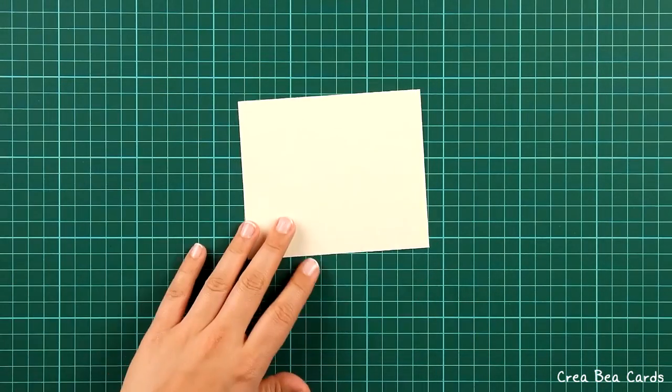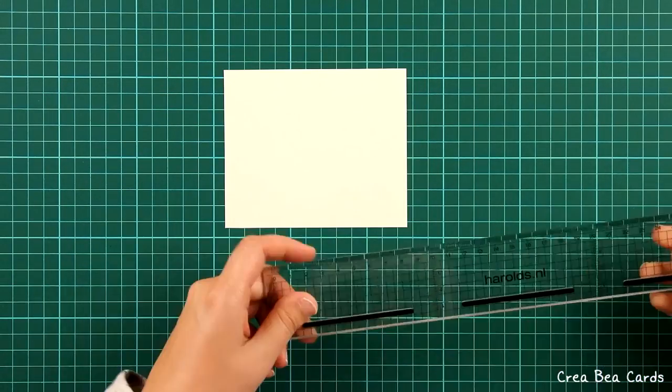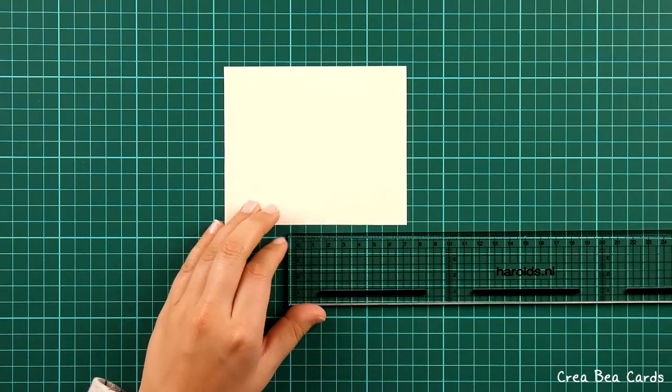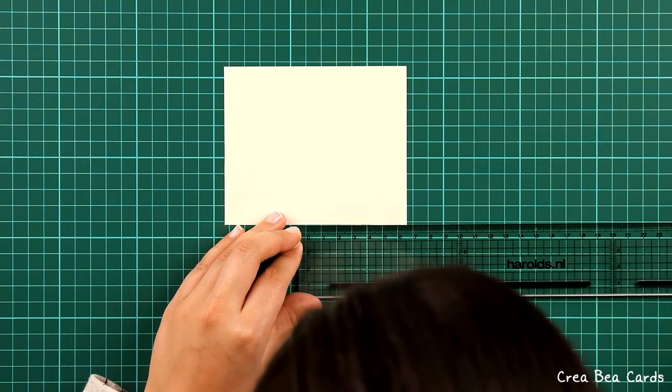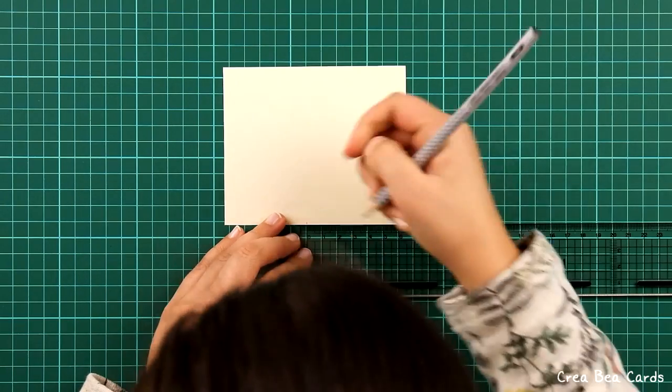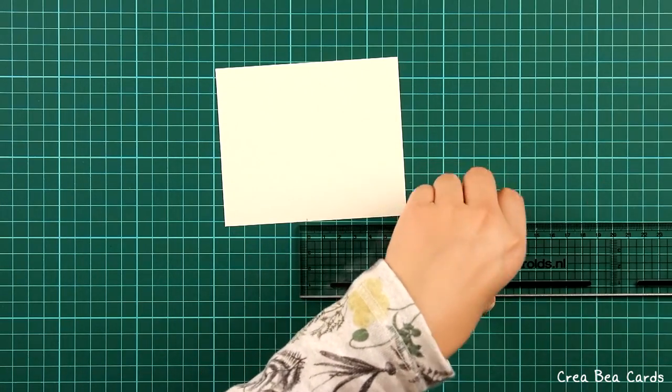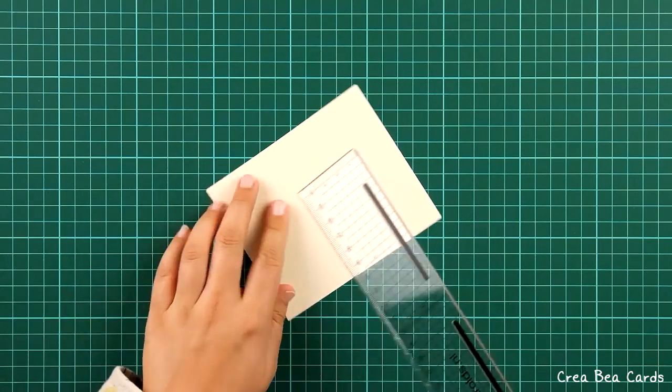First, cut out a candle from cream paper with a craft knife and graphic ruler. The dimensions for the candle are 1.7 x 6.5 cm.